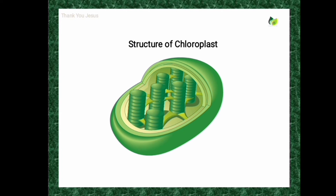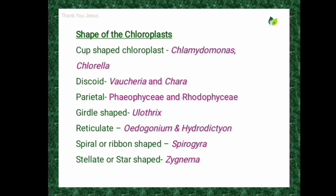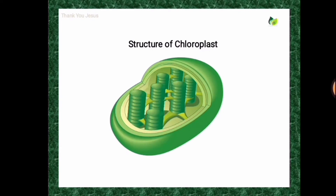Chloroplasts exhibit different shapes in different plants. In higher plants they may be oval, disc-shaped, or biconvex shaped. In algae they show great variations in shape: cup-shaped chloroplasts are present in Chlamydomonas and Chlorella; disc-shaped in Vaucheria and Chara; parietal-shaped in Phaeophyceae and Rhodophyceae; girdle-shaped in Ulothrix; reticulate-shaped in Oedogonium and Hydrodictyon; and spiral or ribbon-shaped in Spirogyra; stellate or star-shaped in Zygnema.